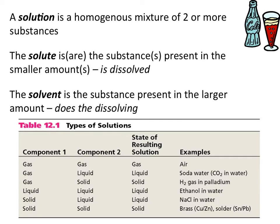Solutions can consist of many different types. You can have gas-gas mixtures, gas-liquid, gas-solid, liquid-liquid, solid-liquid, and even solid-solid solutions. The mixing of the components doesn't even have to be in the same phase, which allows us to have various different types of solutions — from gases to liquid-gas mixtures to solid-solid mixtures. A solution can be varied; it just depends on what's present.